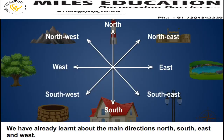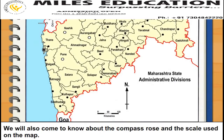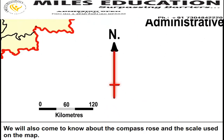We have already learnt about the main directions North, South, East and West. In this chapter, we shall learn about the sub-directions North-West, North-East, South-East and South-West. We will also come to know about the compass rows and the scale used on the map.